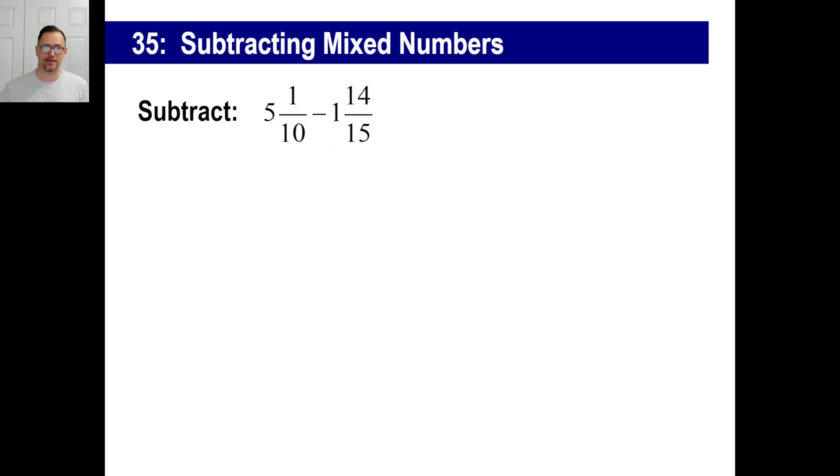Now, occasionally though, you get something like this, where you have five and one tenth minus one and 14 fifteenths. Now, if you look at this, you can go, okay, I'm going to do one tenth minus 14 fifteenths. And you go, okay, well, I can't quite figure out what the deal with that is.